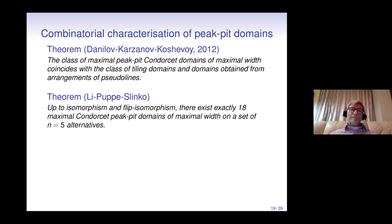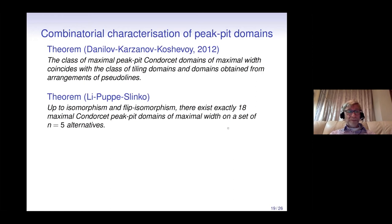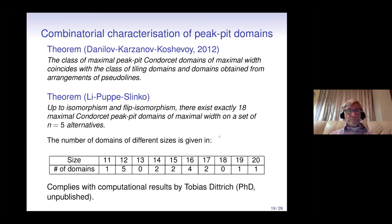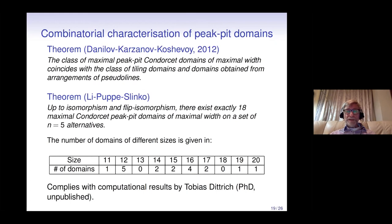Together with my PhD student Lee and co-authors, we classified up to isomorphism and flip-isomorphism all maximal peak-peak domains of maximal width on five alternatives, finding exactly 18. Their sizes range from a minimum of 11 (the single-crossing domain) to a maximum of 20 (Fishburn's domain). The distribution of sizes is: for size 12 there are five domains, for size 13 there are none, and so on.